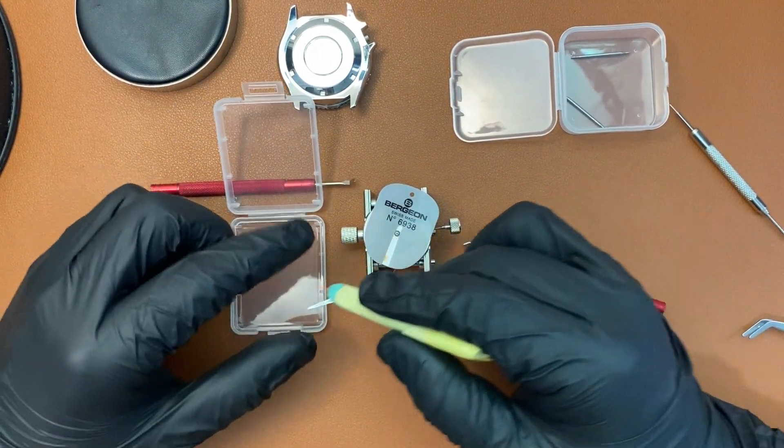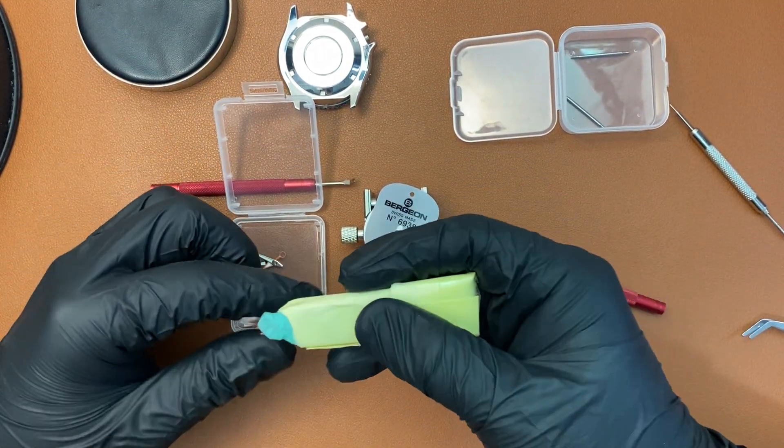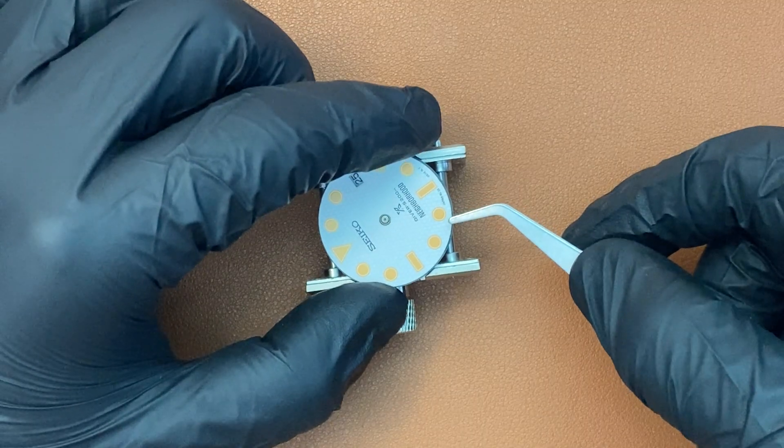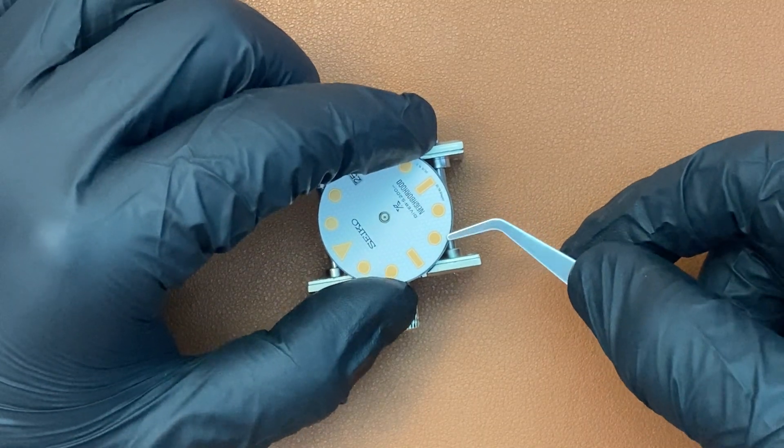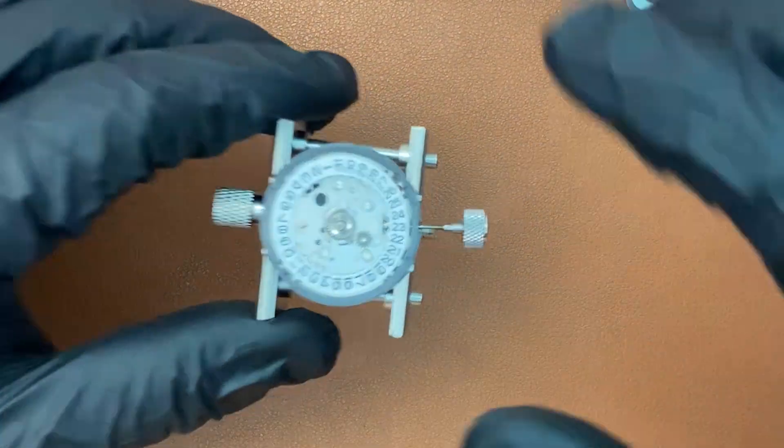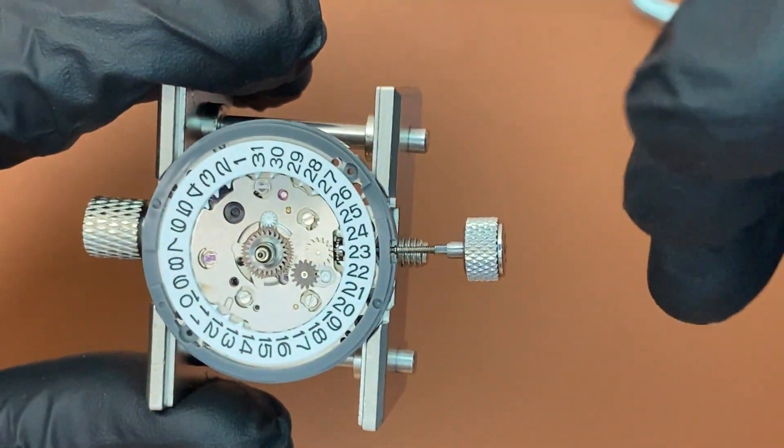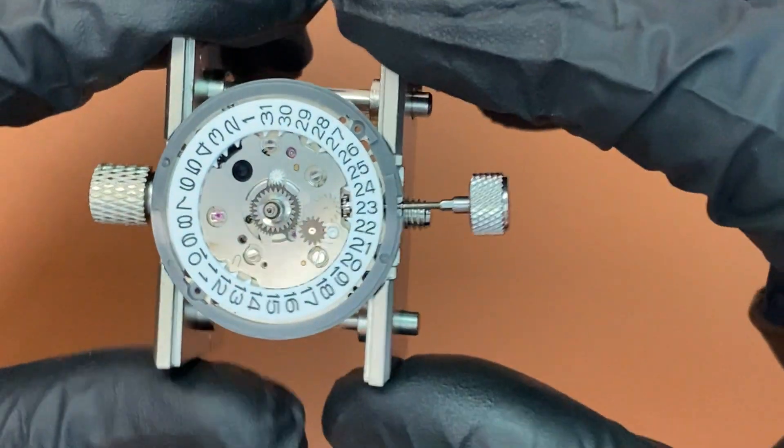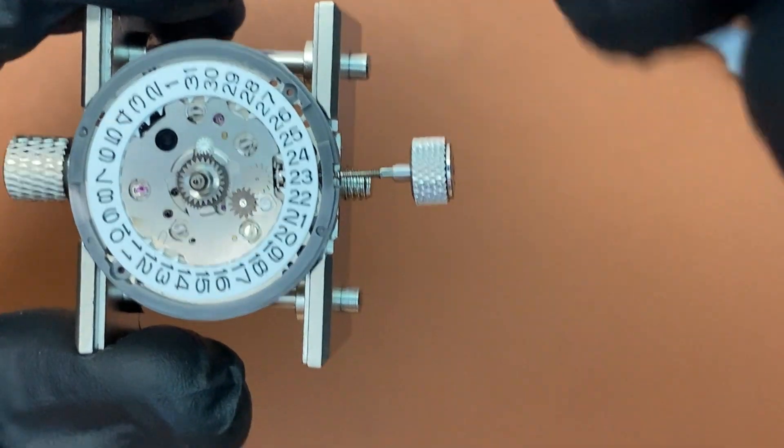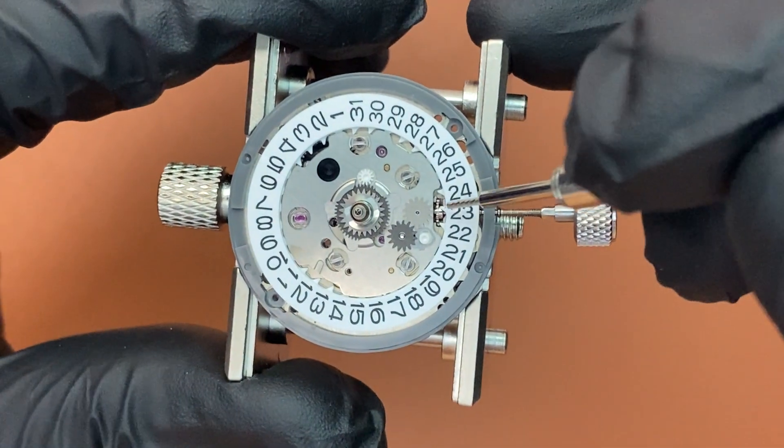Lastly, remove the dial. Obviously, with the problem that I cannot quick set the time and the GMT hand, something to take note is the date wheel transmission over here. It lies vertically.